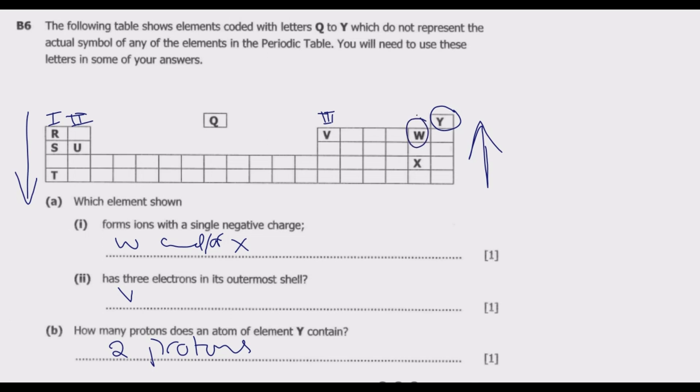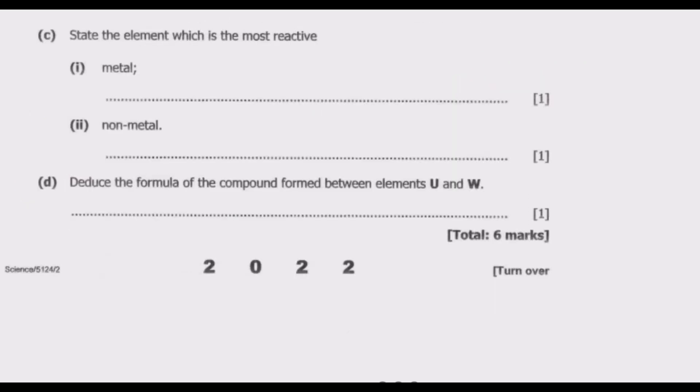Then for non-metals, as you go up. You notice that W, this should be fluorine, which is the most reactive non-metal. Then in this case, we're going to have T. T will be the most reactive metal. Then W will be the most reactive non-metal.